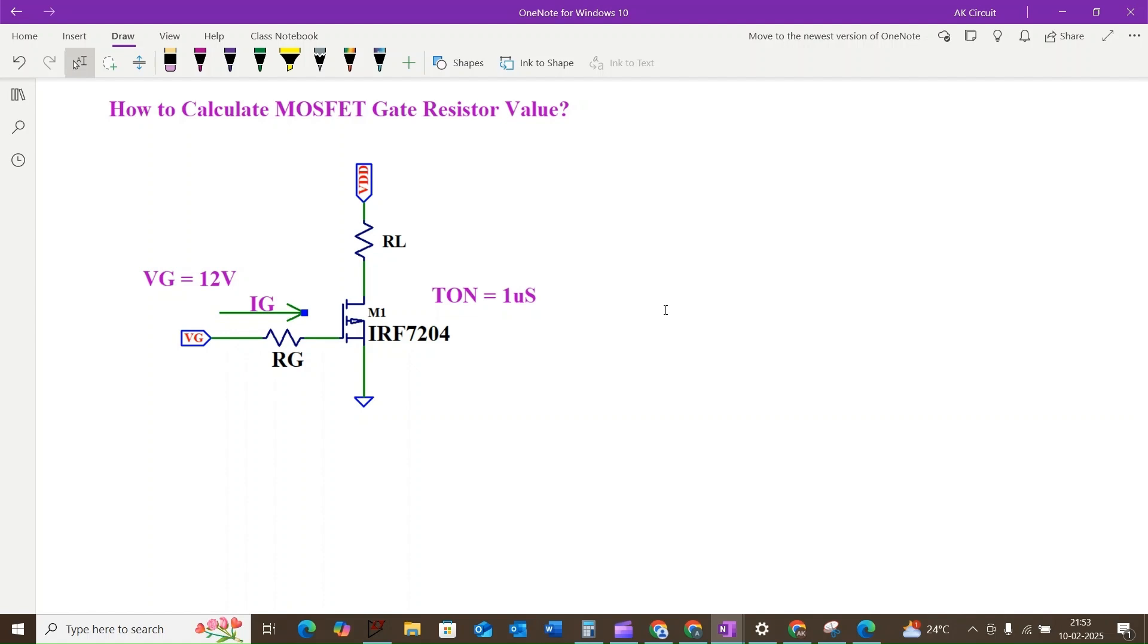We are considering the following parameters here: the gate voltage VG is equal to 12 volts, and we are considering the MOSFET part number as IRF7204. The on time TON will be equal to 1 microsecond, and our goal is to calculate the gate resistance RG.